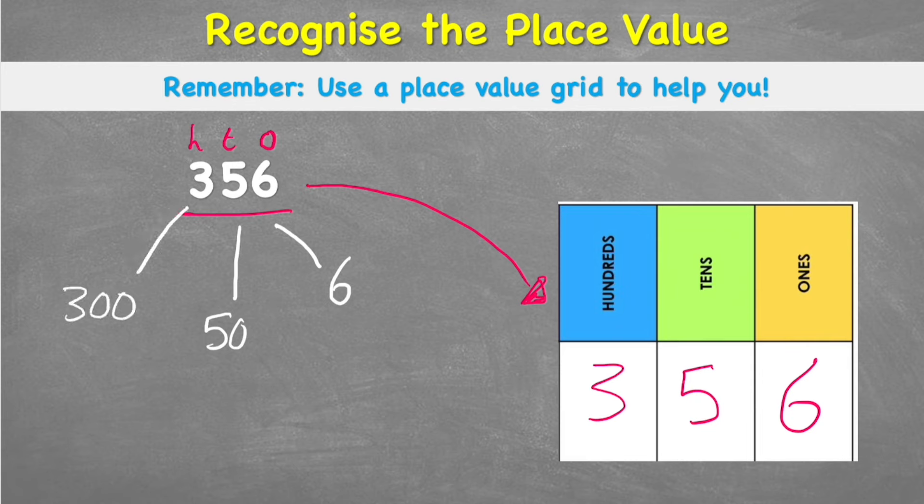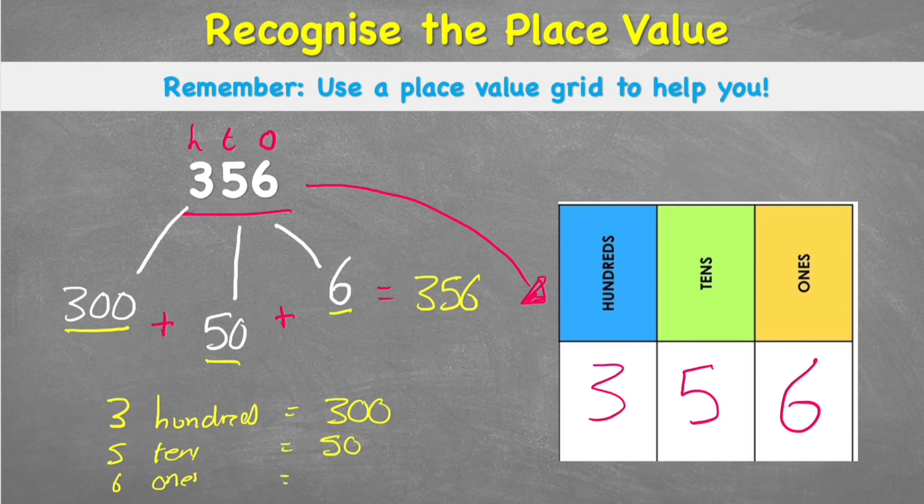And again, I should find that if I add these together, I should equal the original number, and 300 plus 50 plus 6 equals 356. So in other words, I have 3 hundreds, which equals 300, I have 5 tens, which equals 50, and I have 6 ones, which just equals 6.